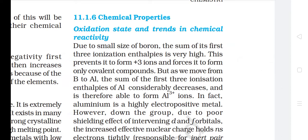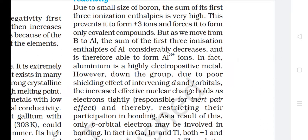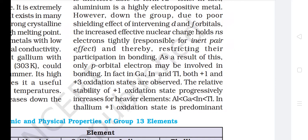Chemical Properties — Oxidation State and Trends in Chemical Reactivity: Due to the small size of boron, the sum of its first three ionization enthalpies is very high, which prevents it from forming +3 ions and forces it to form only covalent compounds. As we move from boron to aluminium, the sum of the first three ionization enthalpies decreases considerably, enabling aluminium to form Al3+ ions. In fact, aluminium is a highly electropositive metal. However, down the group, due to poor shielding effect of intervening d and f orbitals, the increased effective nuclear charge holds the ns electrons tightly — responsible for the inert pair effect — restricting their participation in bonding. As a result, only the p orbital electron may be involved in bonding. In gallium, indium and thallium, both +1 and +3 oxidation states are observed.